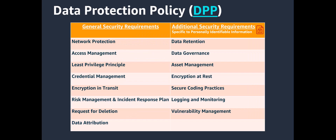The Data Protection Policy governs the receipt, storage, usage, transfer, and disposal of the data vended and retrieved through Amazon Selling Partner APIs. This collection of requirements are driven by industry standards and best practices. As you can see outlined here, the DPP is a collection of 15 requirements.